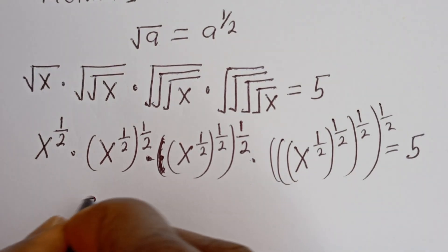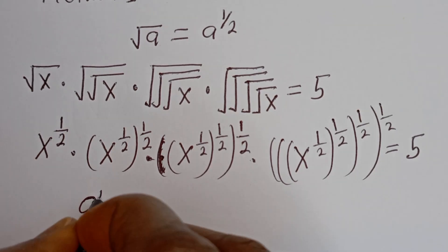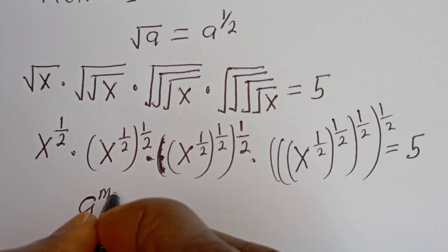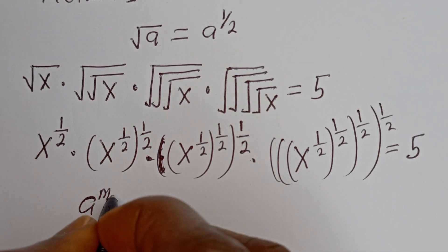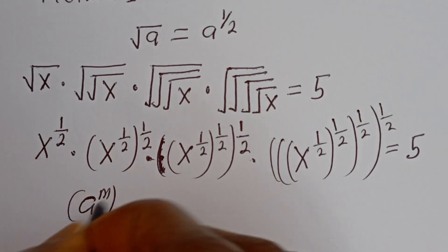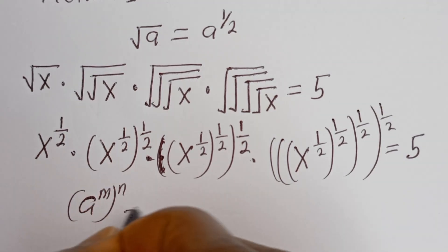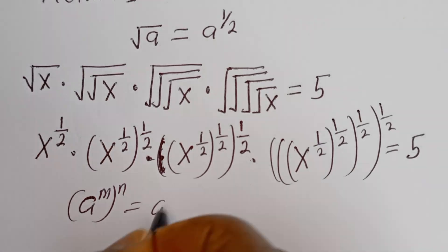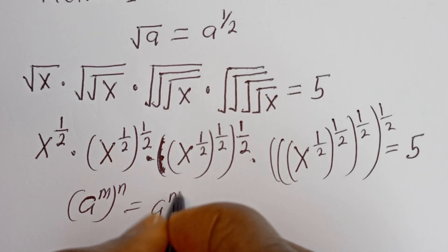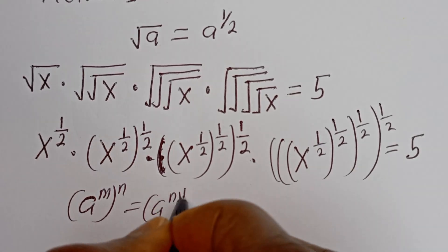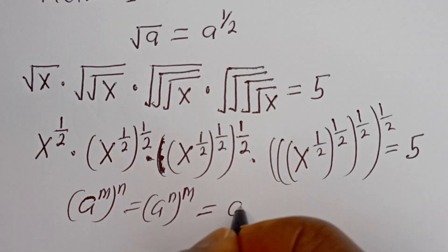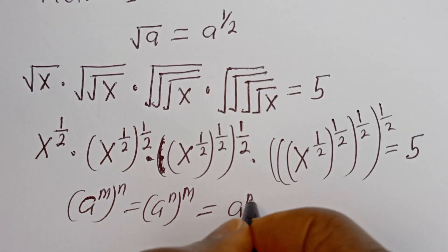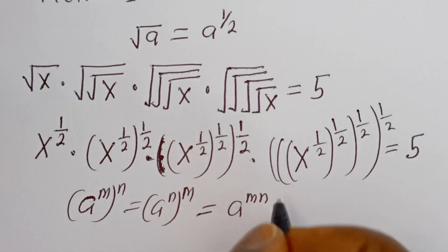Take note that if you have a to the power of m, to the power of n, this equals a to the power of n to the power of m, which equals a to the power of m times n.